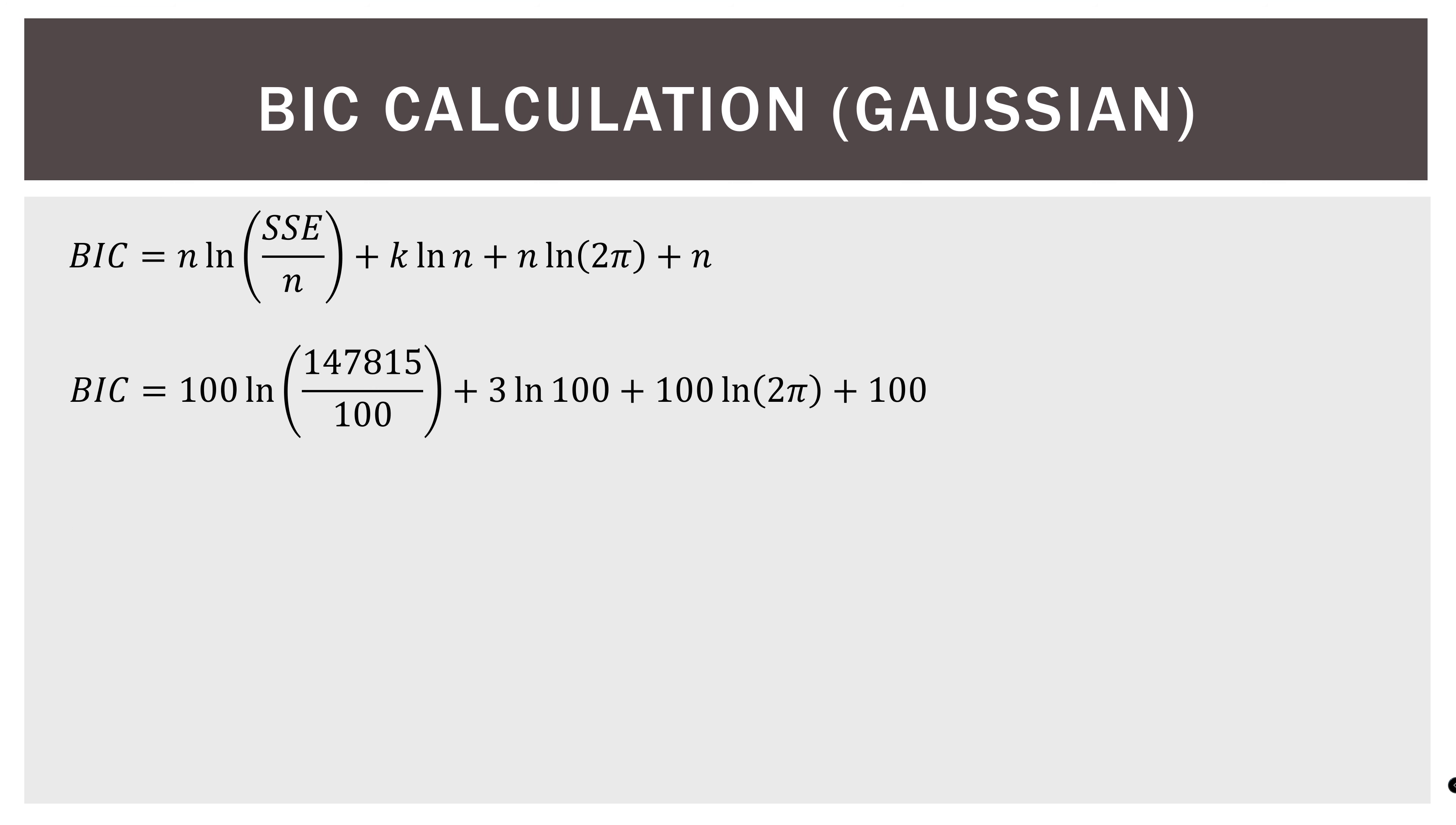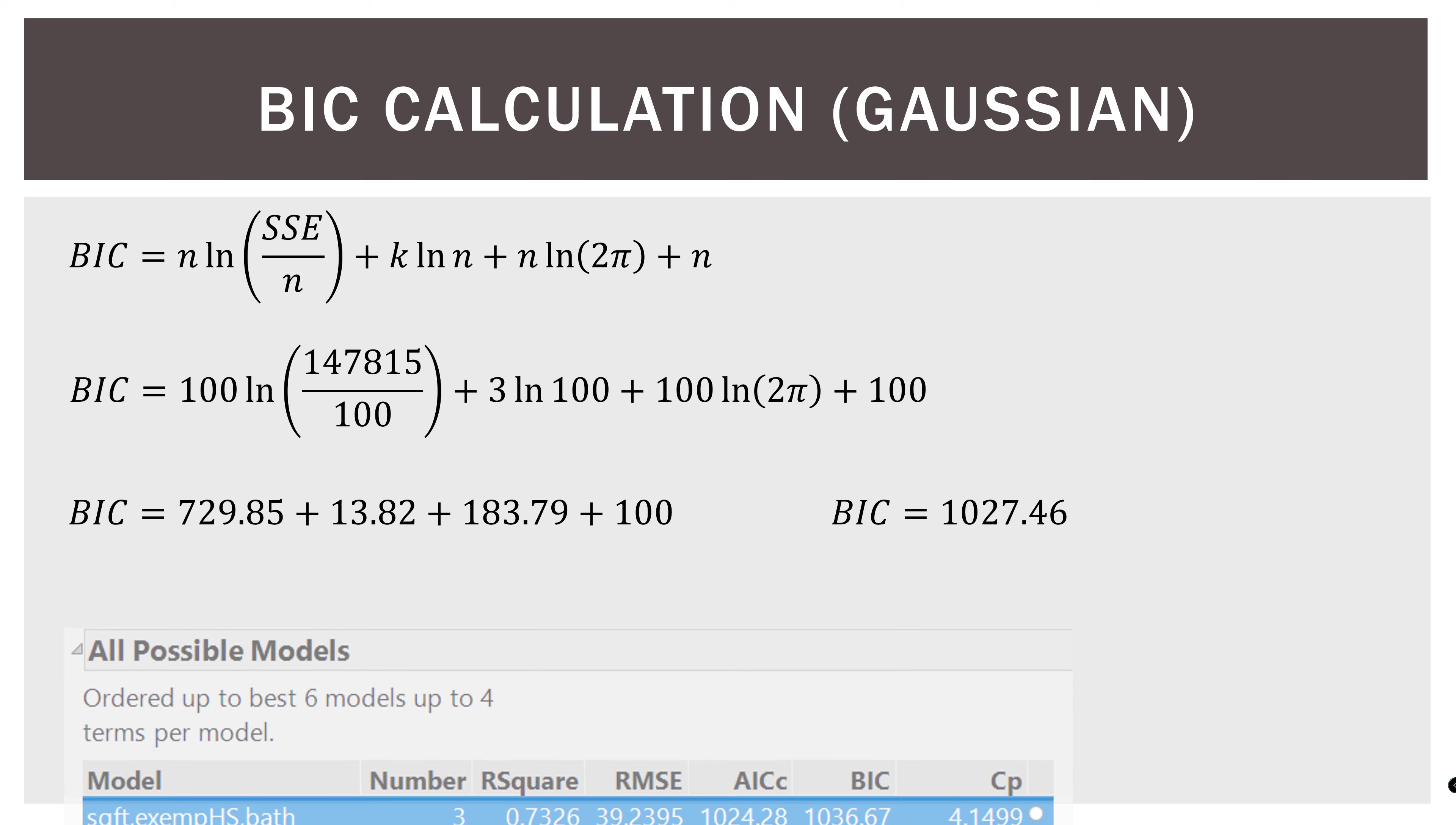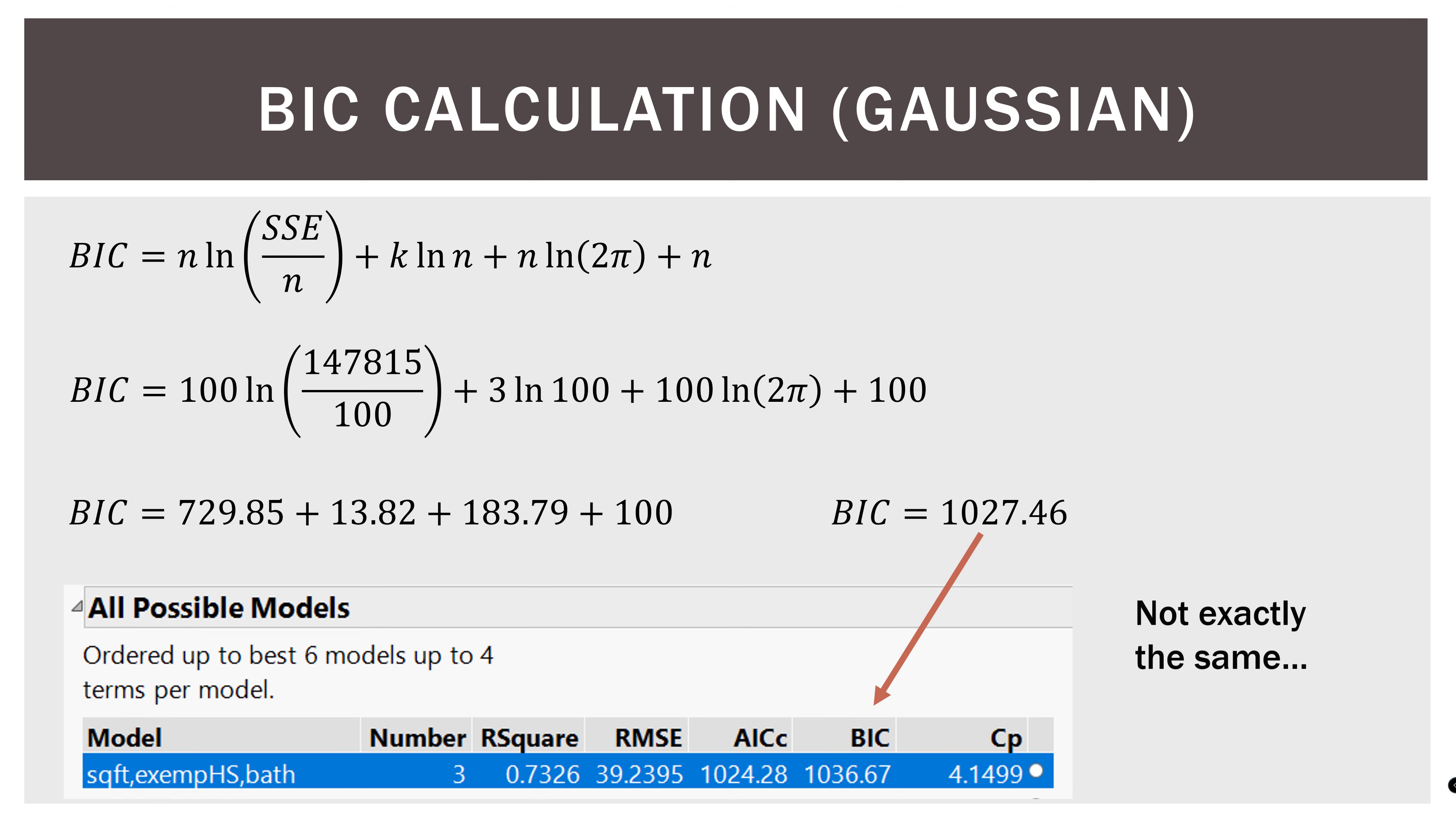BIC is the same way. We substitute everything in, do the math out, and we get a BIC of 1027.46. So again, in the output, it is 1036.67. Again, not exactly the same, and I believe that's because we're using the approximation specific to regression when we're using the formula here. But again, as long as we're internally consistent, we should be able to compare models.